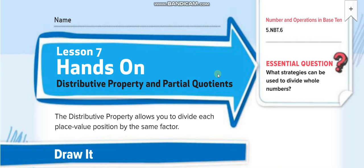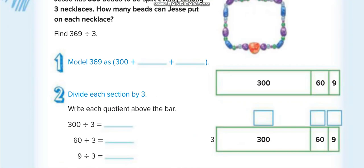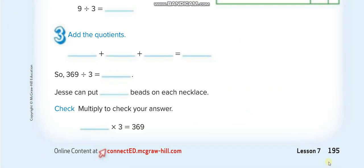Hey everyone, welcome back to my channel, Learn Math with Mr. Saad. Today's lesson for grade 5, chapter 3, lesson 7, hands-on: distributive property and partial quotients. Page number is 195.